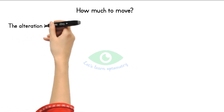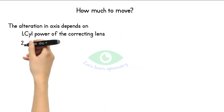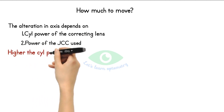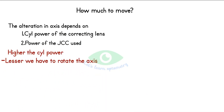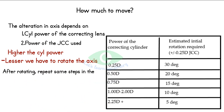The amount of axis rotation depends on the cylindrical power of the correcting lens and the power of the JCC being used. Higher cylindrical power requires smaller rotation steps. For example, if the correcting cylindrical lens is minus 2.5 diopters, move the axis in smaller steps like 5 degrees; but if it is minus 0.5 diopter, rotate in 20-degree steps. A table provides the required initial rotation for different cylindrical power ranges when using a 0.25 JCC.